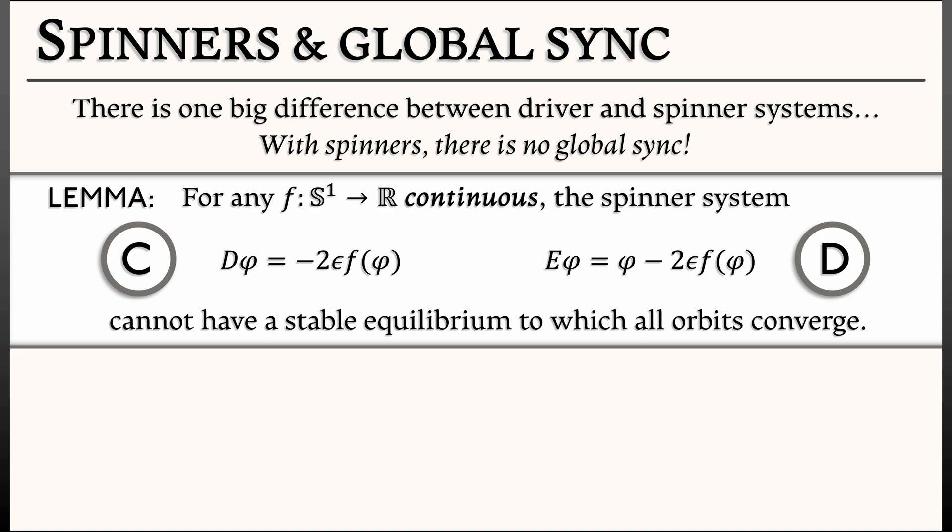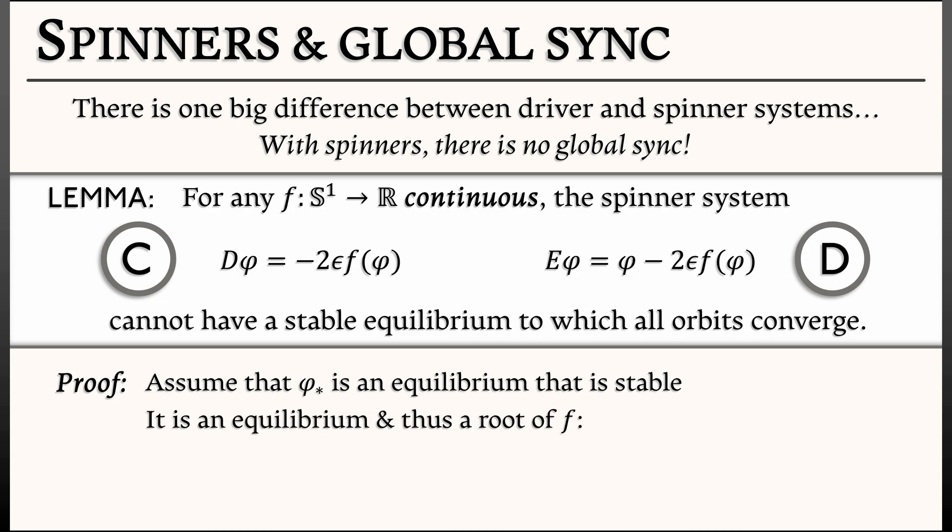Is that weird? No, that's not so weird. The proof is very simple. Let's assume that you have an equilibrium at a certain phase angle φ* and let's assume that it's stable. This is an equilibrium, so φ* is a root of f. That is, f(φ*) = 0. That's your equilibrium.